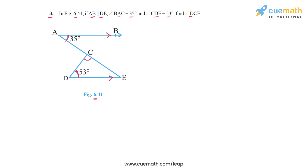The reasoning we're going to use is: first find angle DEC by making use of the fact that it forms an alternate interior angle pair with angle BAC. Once we've done that, we apply the angle sum property to triangle CDE, since two of its three angles will be known, allowing us to find angle DCE.